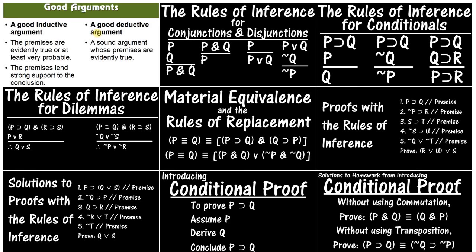Let me just mention what we've covered already and if you need to go back to an earlier video you can do that. The first video was on good arguments. It covers what makes an argument a good one, and for deductive arguments a good argument is a sound argument whose premises are evidently true. A sound argument is one whose premises are true and whose form is valid. Having a valid form means that if its premises are true its conclusion has to be true — the conclusion will follow from the premises. First we covered the rules of inference for conjunctions and disjunctions, then for conditionals, and then for dilemmas.